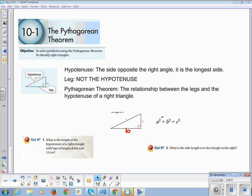The Pythagorean Theorem. Our learning objective is to solve problems using the Pythagorean Theorem and then to use the Pythagorean Theorem to identify right triangles. So what we're going to do is we're going to take a peek at right triangles. The good news is, the Pythagorean Theorem does not apply to any other kind of triangles except the right triangles.